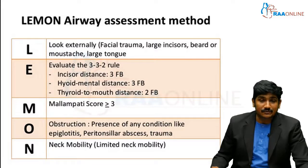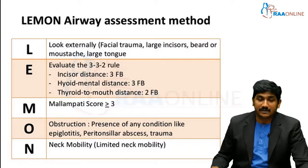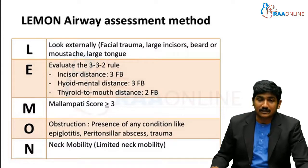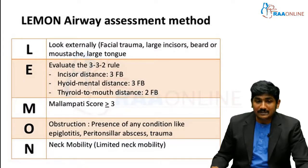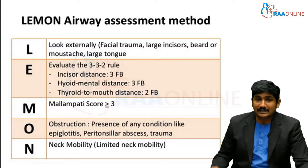E stands for 'evaluate the 3-3-2 rule,' which we will see in detail. M stands for Mallampati score, and O stands for obstruction — that is, presence of any type of obstruction in the oral cavity like epiglottitis, peritonsillar abscess, or direct trauma in the oral cavity. N stands for neck mobility, where only limited neck mobility is possible, such as in C-spine injury or trauma where you cannot do a proper head tilt. These are the areas where you can anticipate a difficult airway.